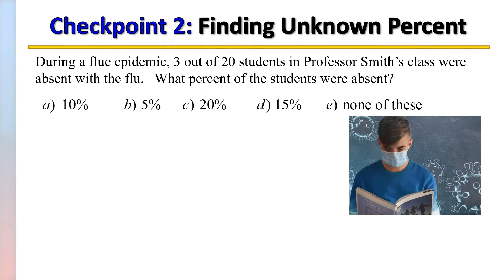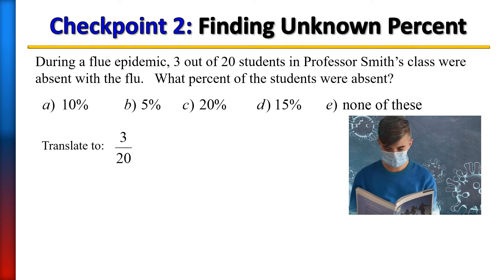What percent of the students were absent? What we want to know is: what is 3 out of 20? Write it as a fraction — 3 over 20 — then divide the top by the bottom to get a decimal, and move two places to the right to turn it into a percent, giving you 15%. So 15% of the students were absent.